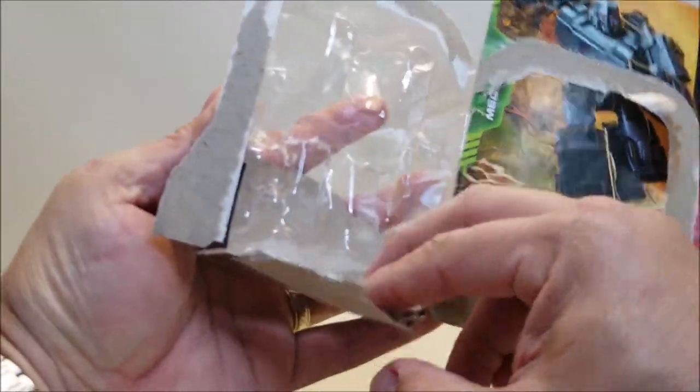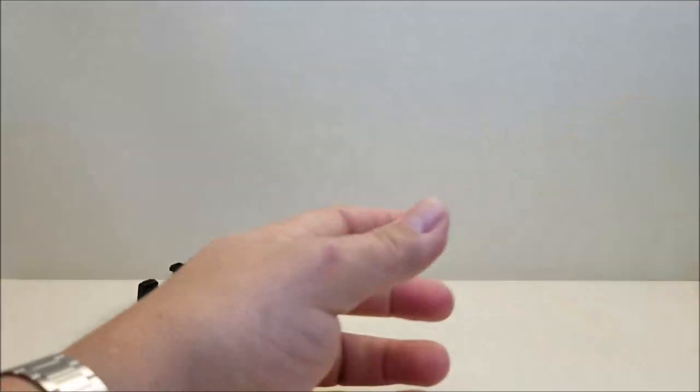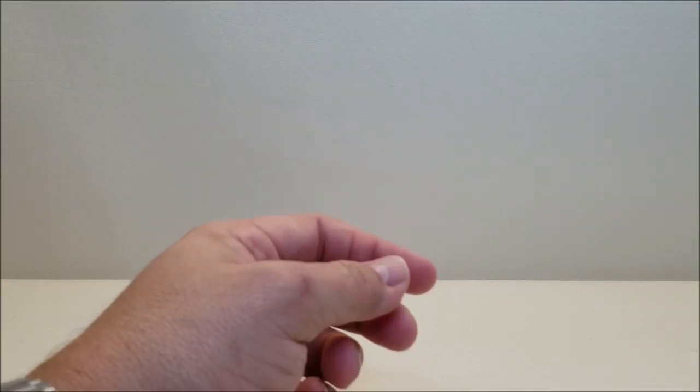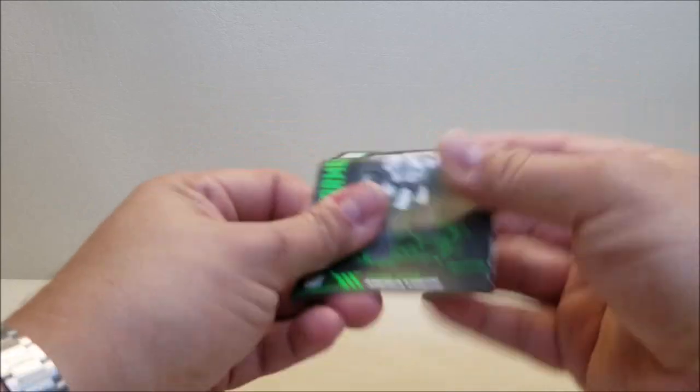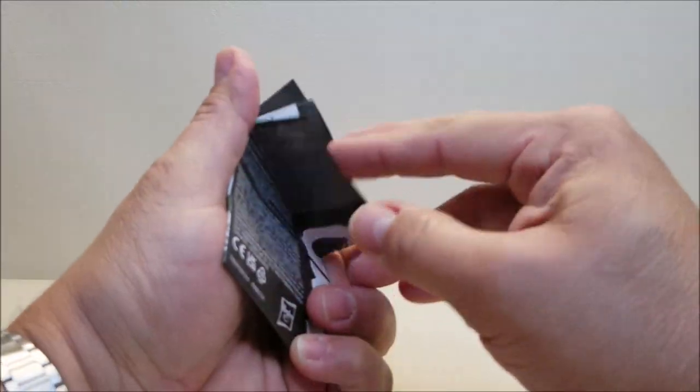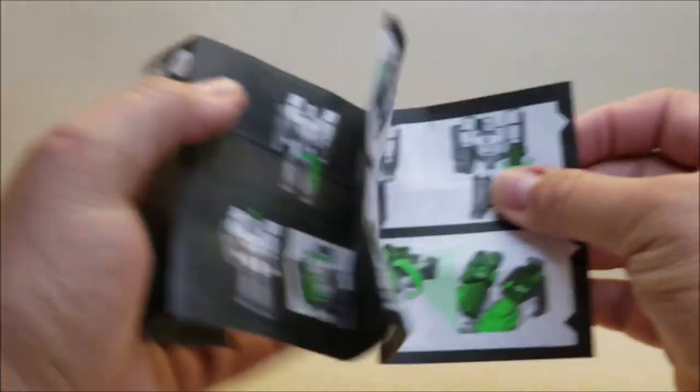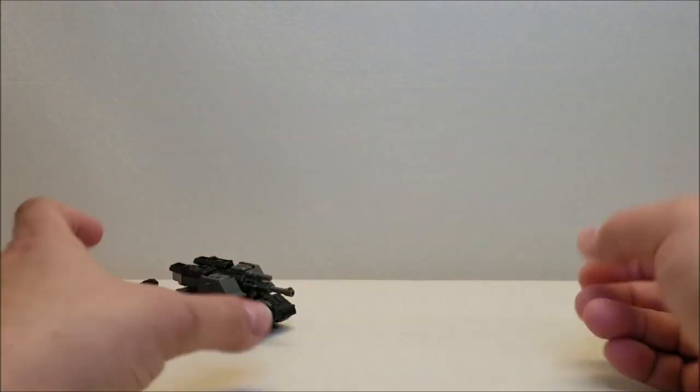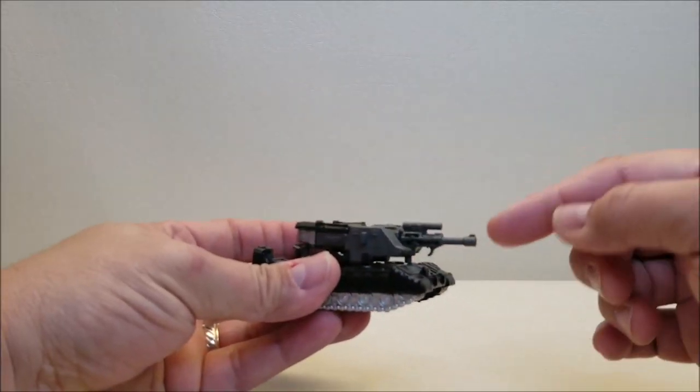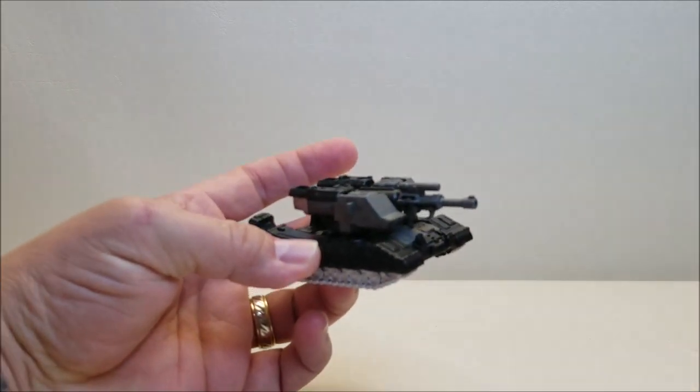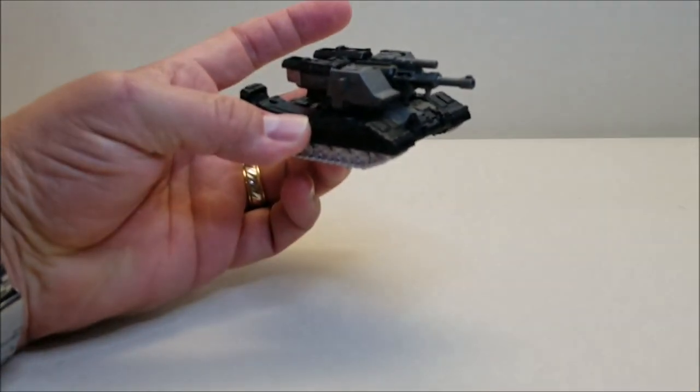He does come included with his sheet of instructions, which is not in there. I've actually got it over here. So he's got a sheet of instructions, fairly simple and easy to follow, but it's a core class figure and it's relatively easy to transform. He also comes packaged with his gun, which is currently attached to his tank mode to complete his turret.